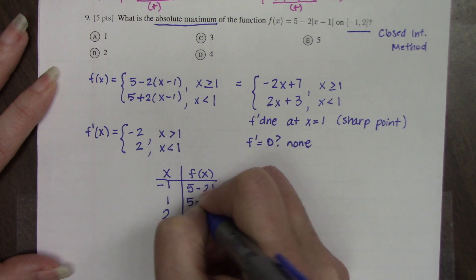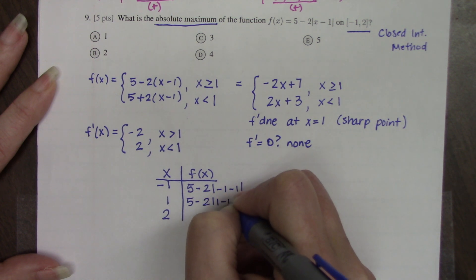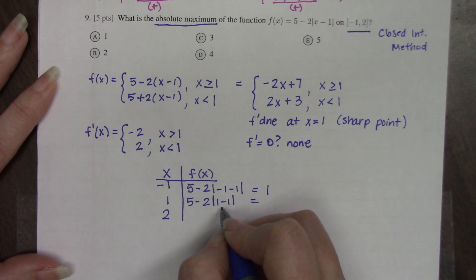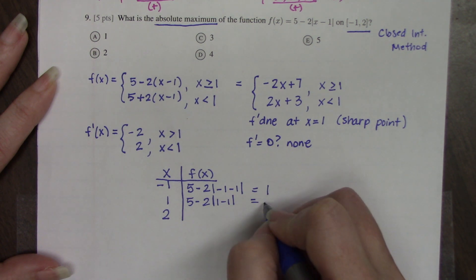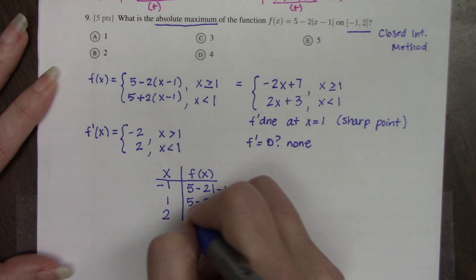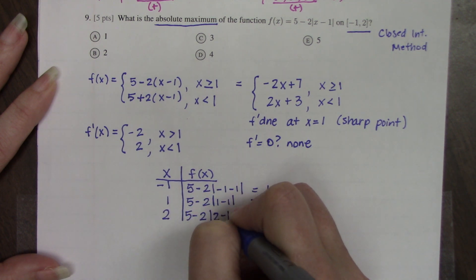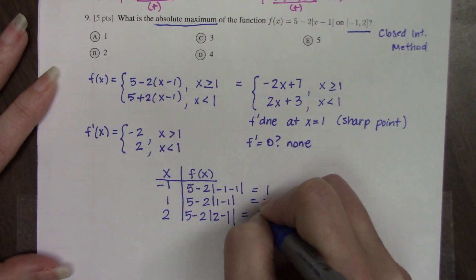If we plug in 1, this works out to be 0, so you just get 5 - 0, which is 5. And if we plug in 2, we get 3.